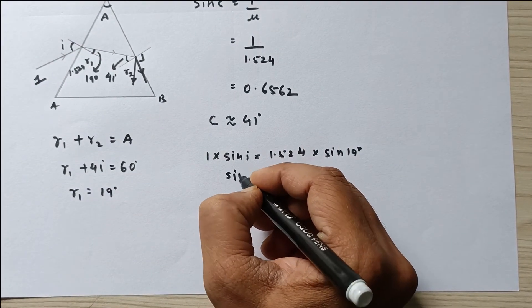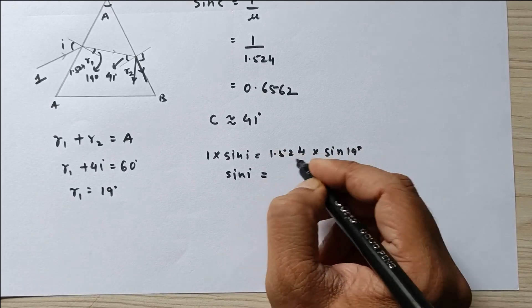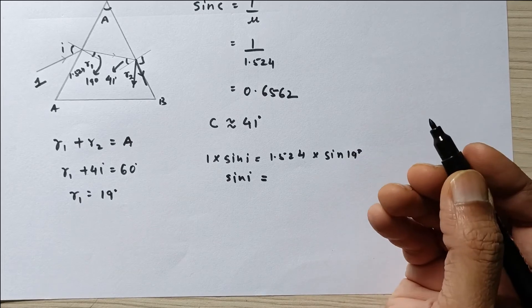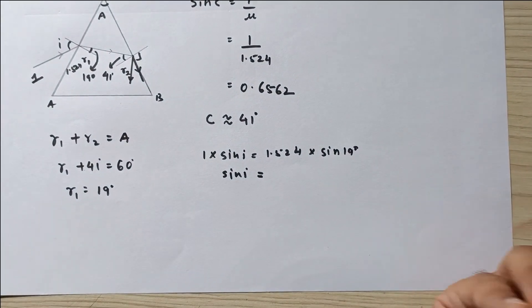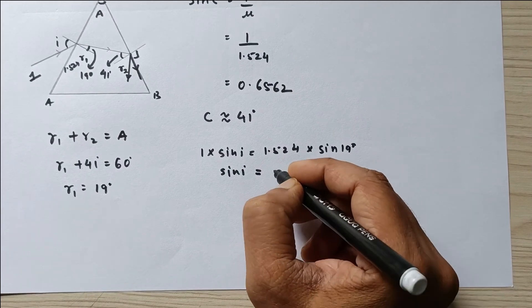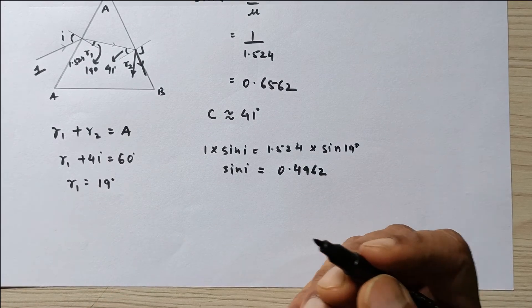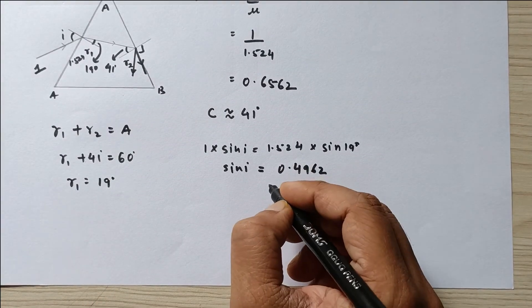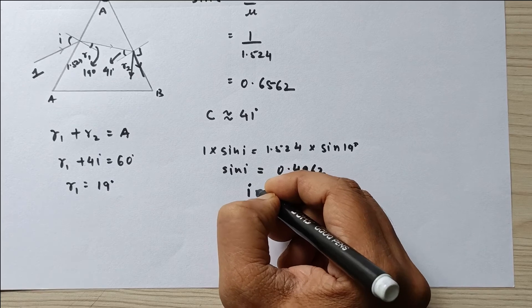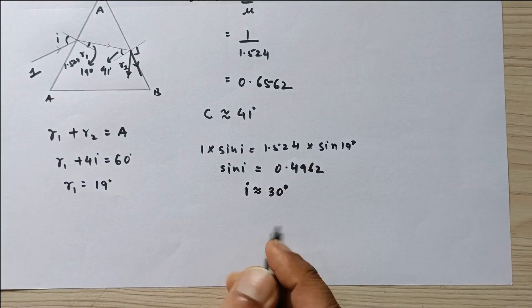So from here, sin I value equals... if you solve this, sin 19 you can find it out from the natural sine table, and when you solve this you will get your answer as 0.4962. Again make use of the natural sine table, you will find that this angle is 29 point something. I am approximately writing this as 30 degrees.